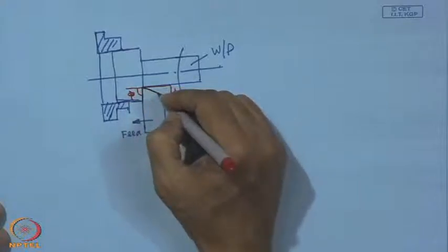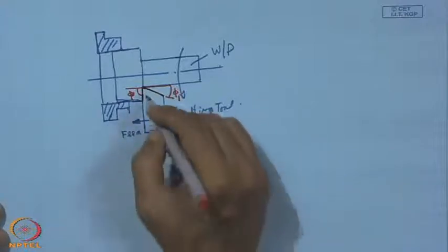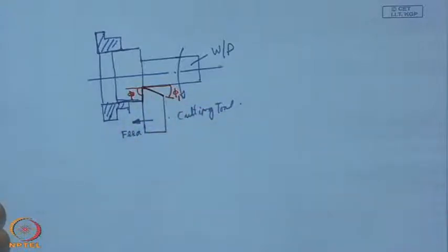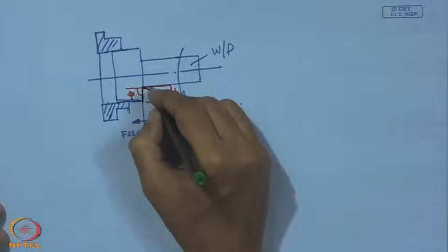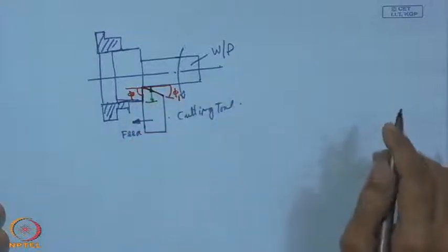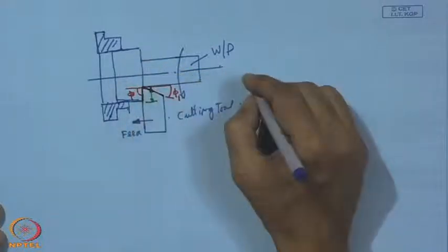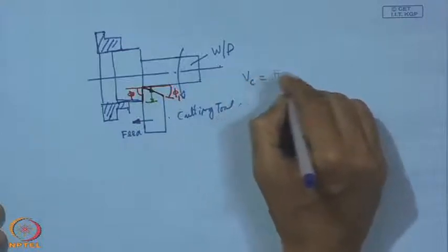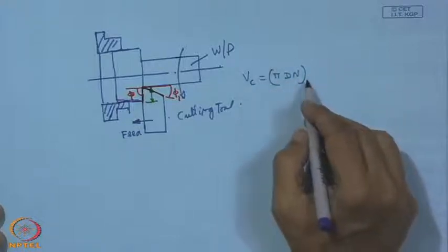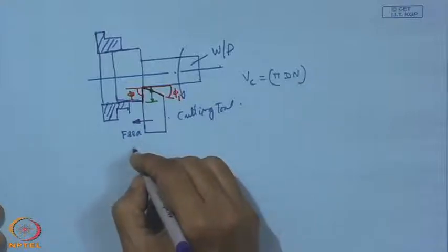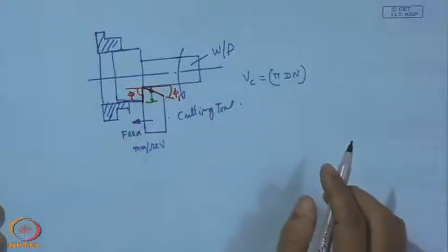These are the cutting parameters. At this diameter, V_c = π·d·n, expressed in meters per minute or meters per second. Feed is given as millimeters per revolution, and depth of cut is expressed in millimeters. We need to understand the geometry of the tool — if we redraw and take a section, we can find the direction of velocity and a line perpendicular to that velocity.